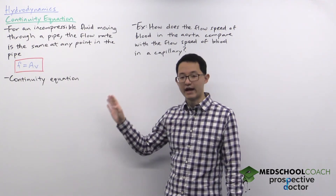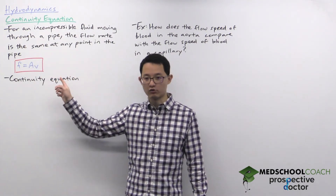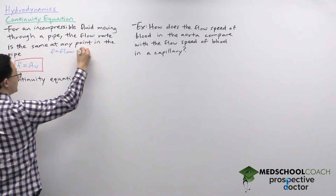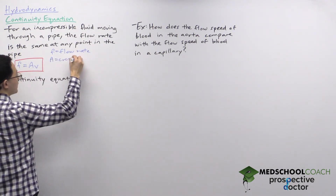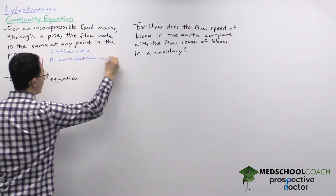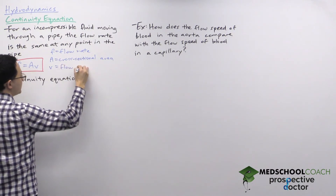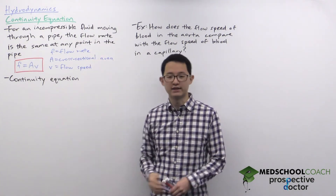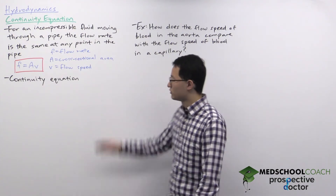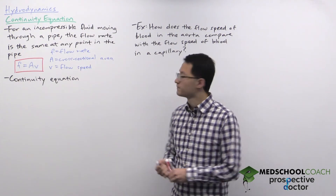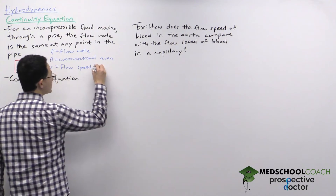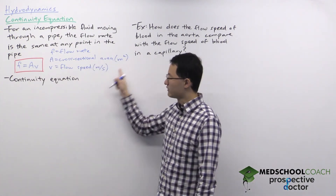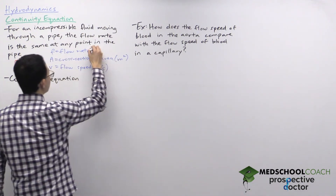Now there are some equations we need to discuss. First, we need to know how to calculate the flow rate. The lowercase f stands for flow rate, a stands for the cross-sectional area of the pipe, and v stands for the flow speed. Looking at the units: speed has units of meters per second, area has units of meters squared, so multiplying them together means flow rate has units of meters cubed per second.